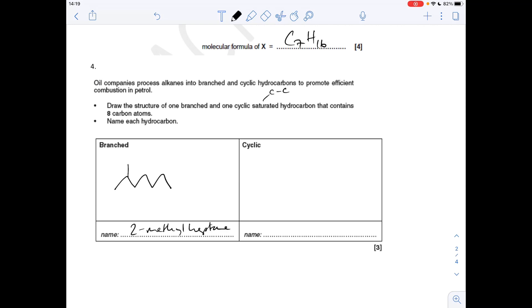For the cyclic one, there's absolutely loads of possible answers. It's basically got to be a ring, so I've gone for just a ring of six. I find it easy to draw a hexagon.